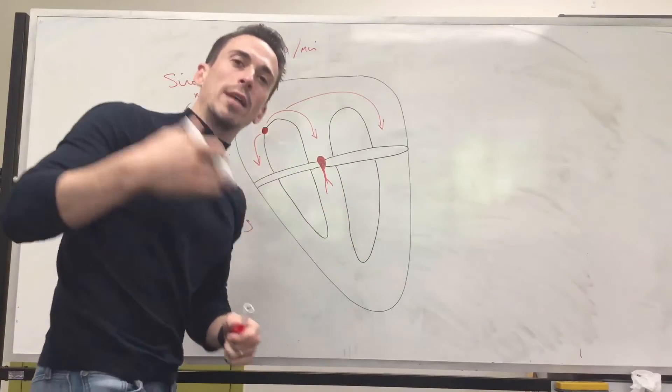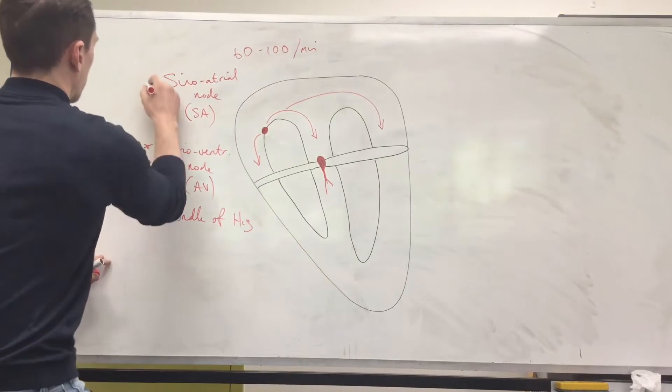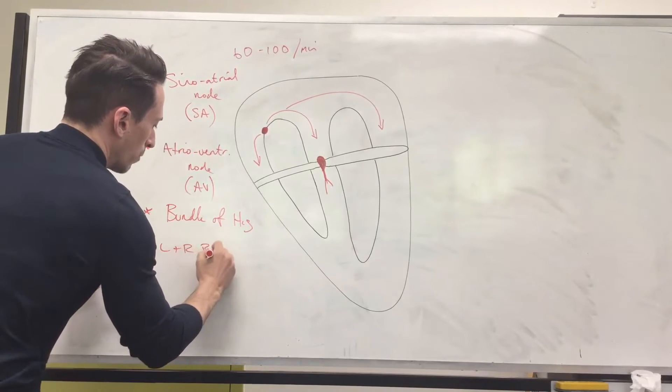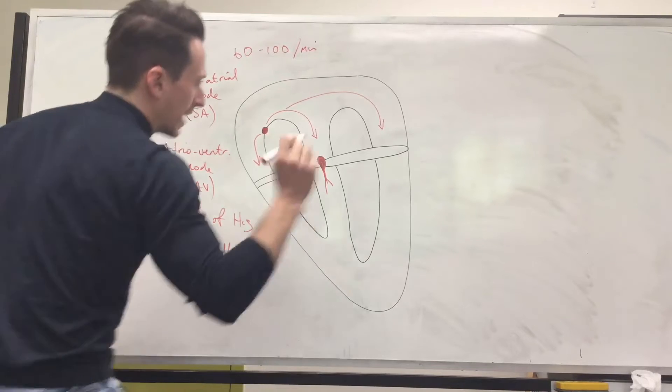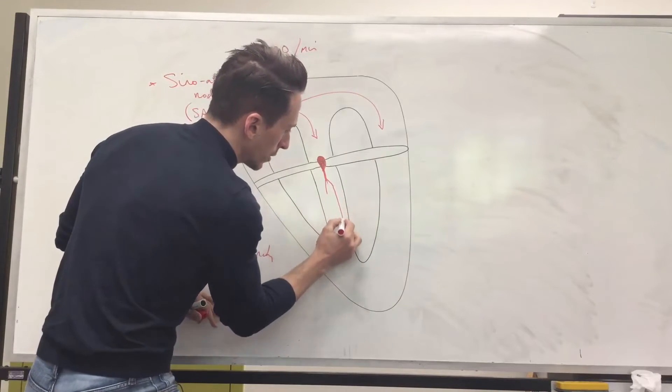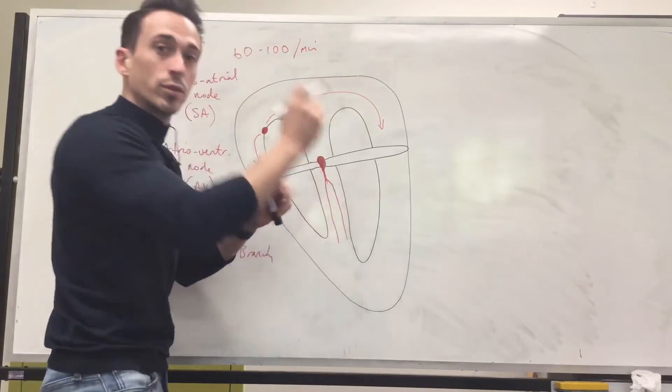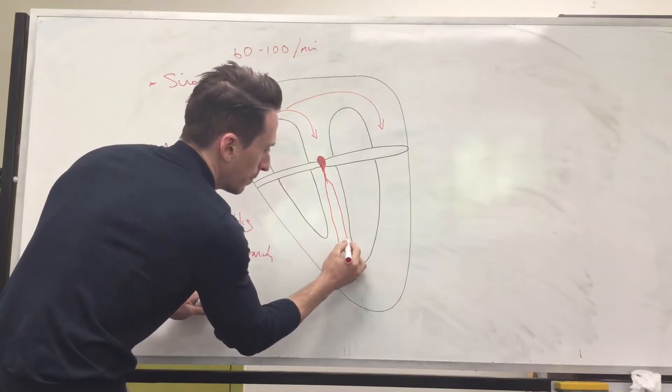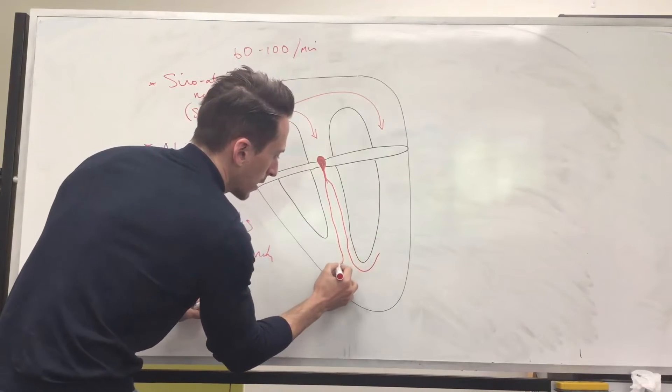Into left and right bundle branches. Left and right bundle branches. Left and right bundle branches go down this septum between the two ventricles that we call the interventricular septum. Now as it moves down, it goes down to the apex of the heart and then up.